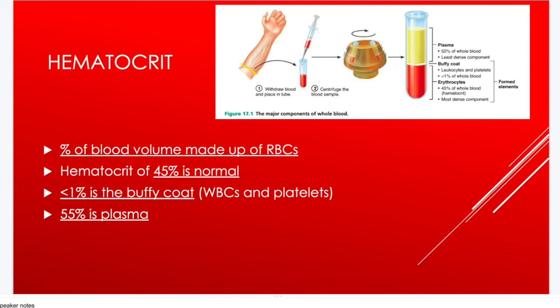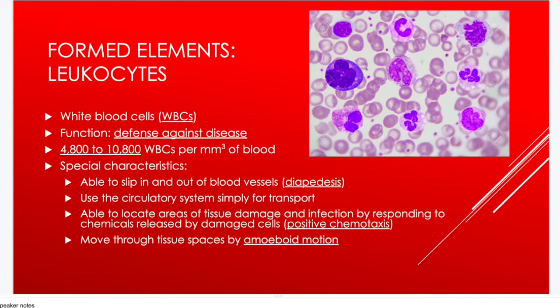Hematocrit is the measurement of the percentage of blood volume made up of erythrocytes — around 45% is normal. The remaining ~55% is plasma, and less than 1% is the buffy coat containing white blood cells and platelets. Next we move on to leukocytes, or white blood cells (WBCs).